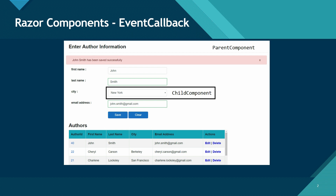If you have an issue on our authors page — whenever I try to save an author, I enter first name, last name, select the city from the dropdown, enter email address, and when I save it, John Smith does get saved in my database, but the city for John Smith does not get saved. The reason why that's happening is because the dropdown where we select the city is a child component, and we're not able to get the value of this dropdown in our main form to save it in the database.